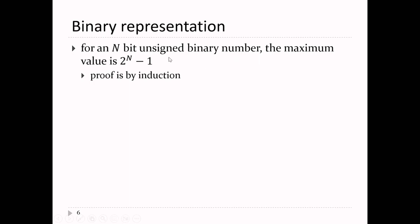If you happen to have an n-bit unsigned binary number, you can calculate the maximum decimal value — it turns out that's 2 to the n minus 1.